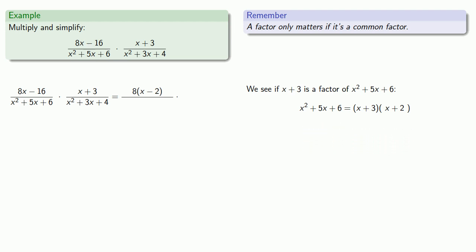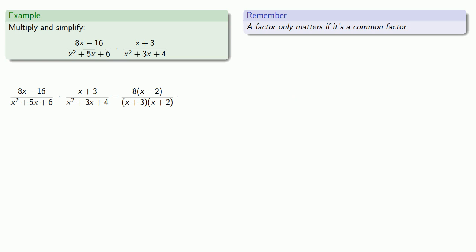Since equals means replaceable, instead of x squared plus 5x plus 6 we write x plus 3 times x plus 2. Again, a factor only matters if it's a common factor, so we check whether x minus 2 is a factor of the only thing not yet factored: x squared plus 3x plus 4.